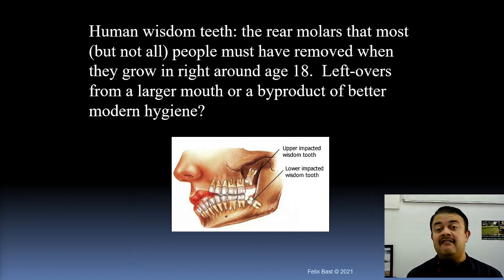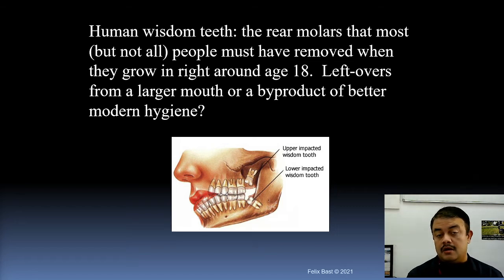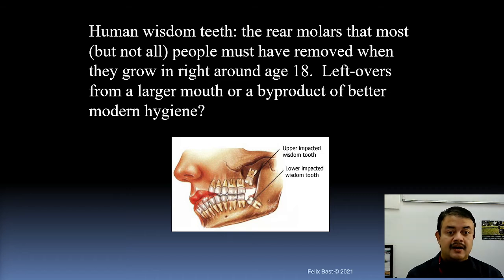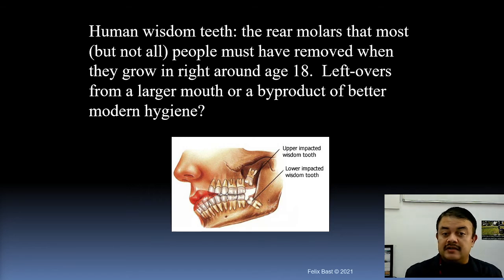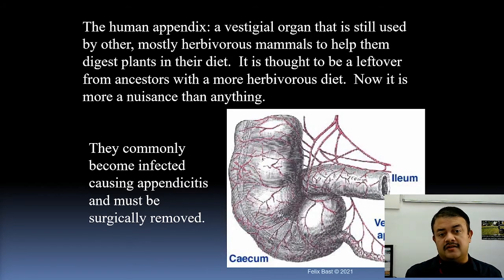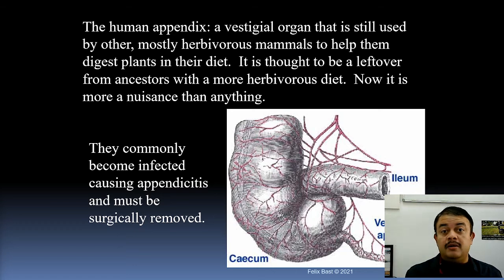Wisdom teeth are another example of a vestigial organ. We have no real function for them today, and an impacted wisdom tooth can lead to infections. Surgical excision is not always needed, but if it becomes problematic, it must be removed.